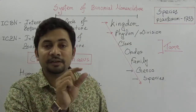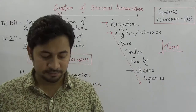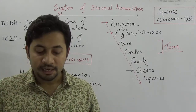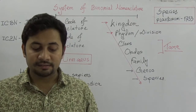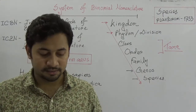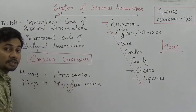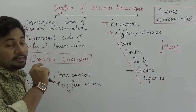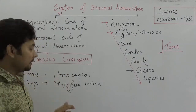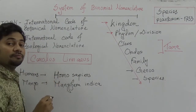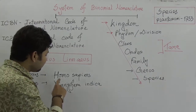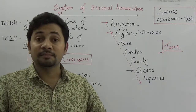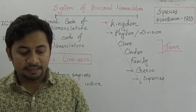Principle number four: the first alphabet of the genus name would be a capital letter with the remaining alphabets in small letters, and the second part of the name is totally in small letters. For example, Homo sapiens — I cannot write the 's' or any other alphabet in the species name in capital. Only the first letter of the genus is capitalized.